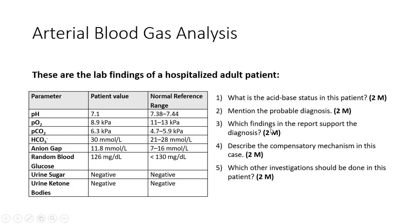Which findings in the report support the diagnosis? The findings we discussed are CO2, PCO2, pH, bicarbonate, and concentration. Anion gap is also given here — it is 11.8, with a normal range of 7 to 16 (mean ~12). Anion gap is important when it comes to metabolic acidosis; it may be high, normal, or low anion gap metabolic acidosis. In this case, anion gap is of no importance to our diagnosis.